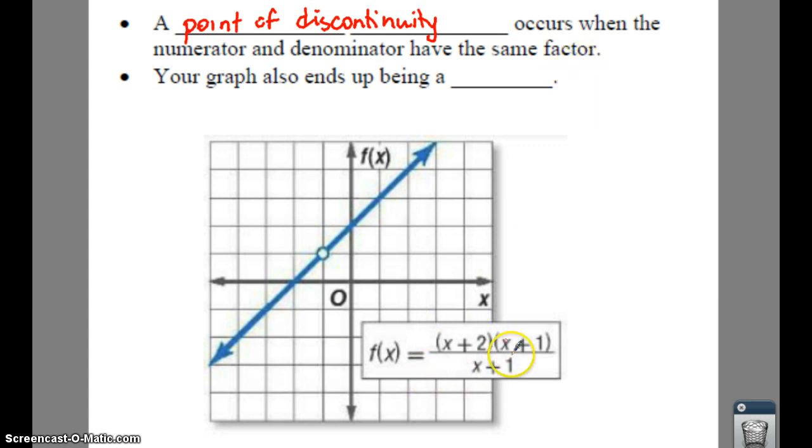If you look at this graph on the bottom, your x plus 1s would cancel, and that would give you just f of x equals x plus 2. So you would go up 2, put a dot, and then go up 1 over 1, up 1 over 1.